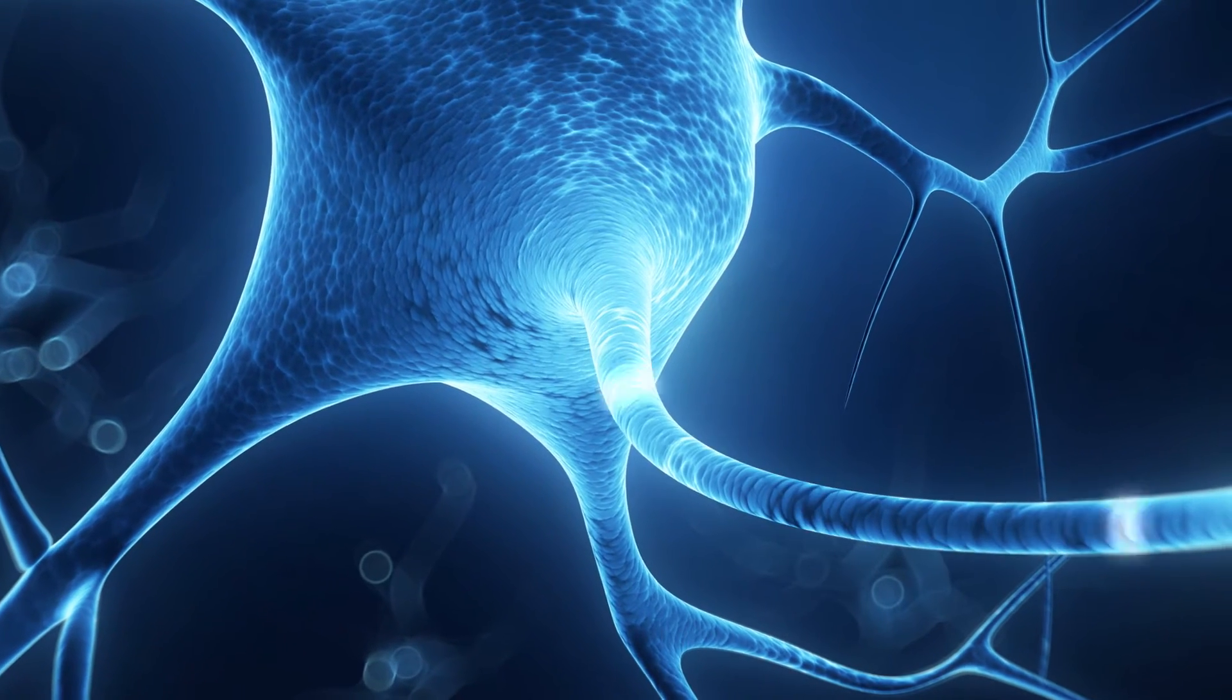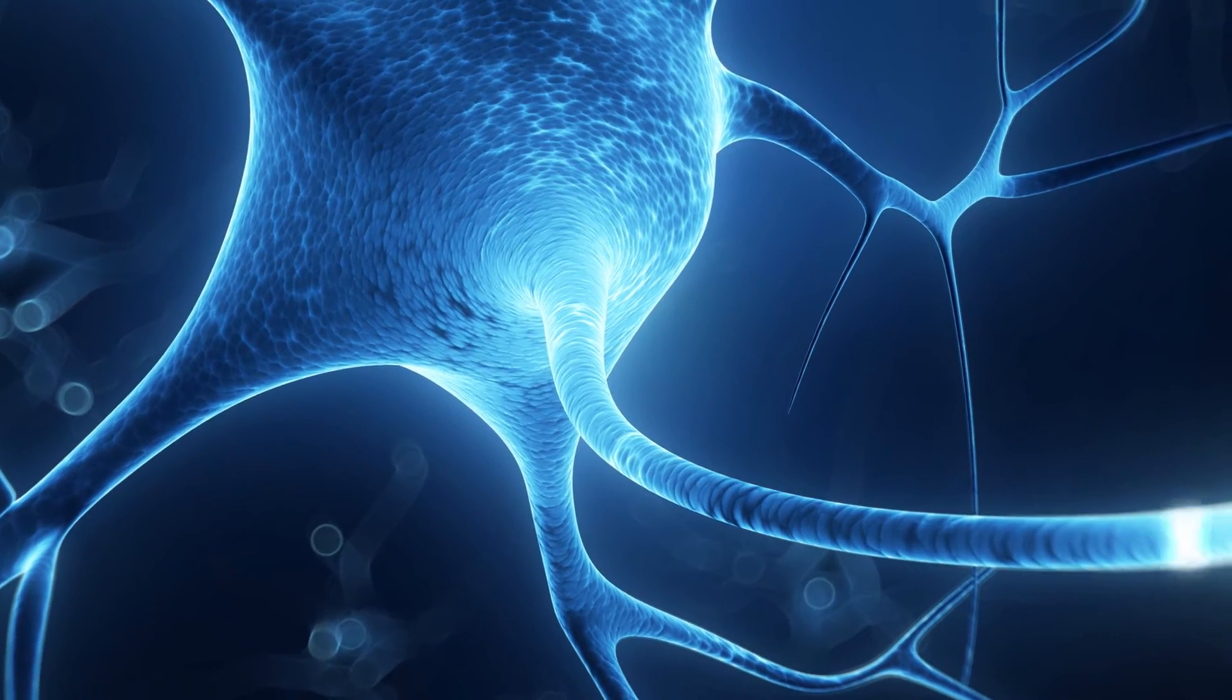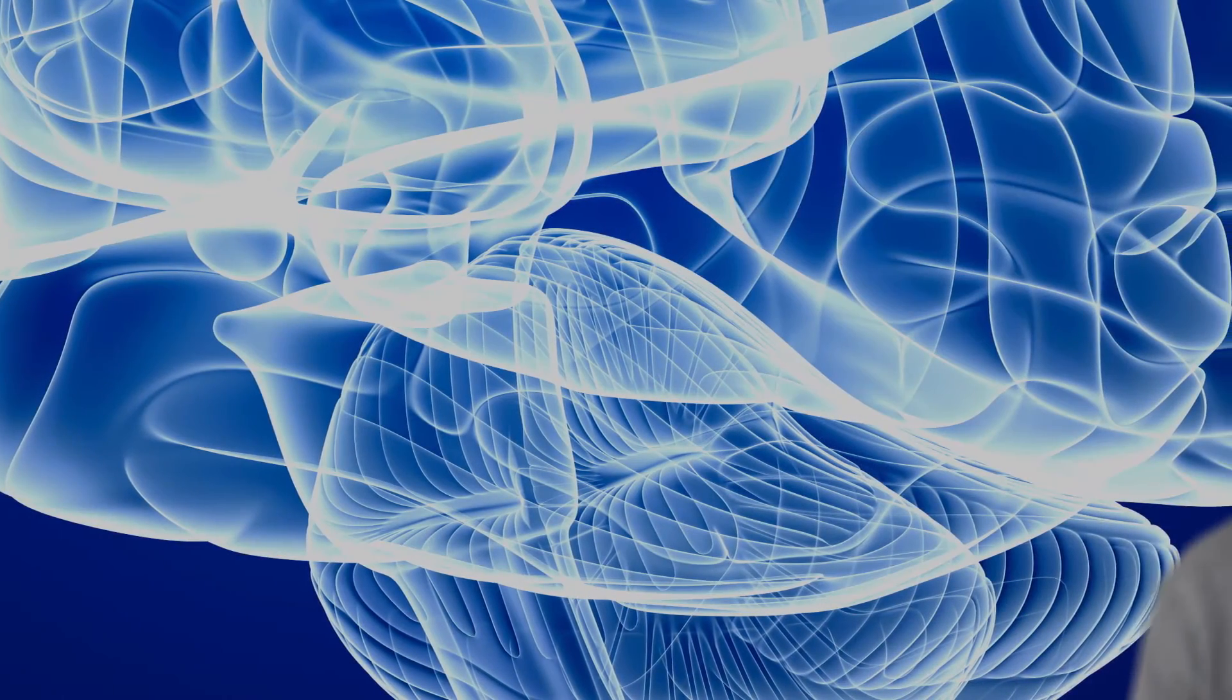And zooming out, these functional disruptions at the neuronal scale can then be extrapolated to the network and eventually, all the way to the entire brain. This approach allows us to identify how physical characteristics influence brain pathology in disease and trauma.